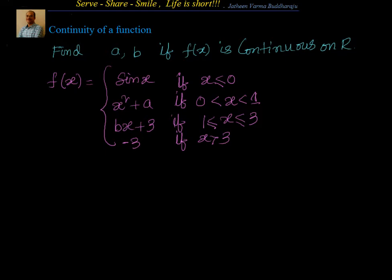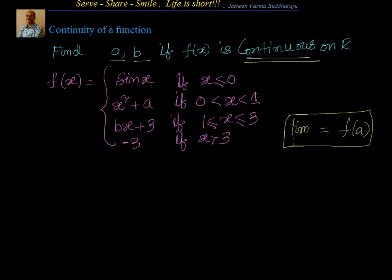We have been given that f of x is continuous on R. We have to find the constants a and b. If f of x is continuous, we know that the limit exists and equals f of a — that is, limit as x tends to a of f of x equals f of a. We will check continuity at particular points: x equal to 0, x equal to 1, and x equal to 3.